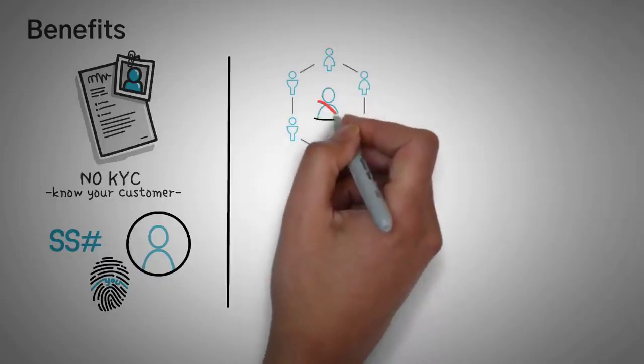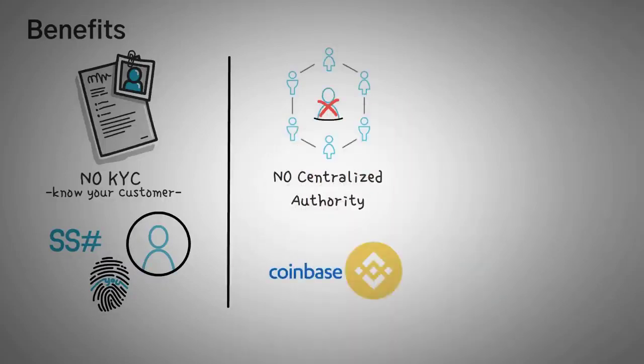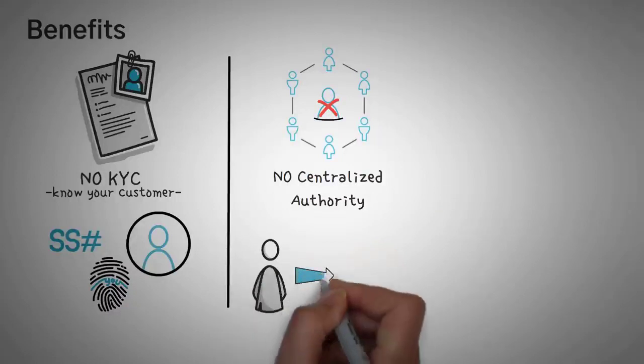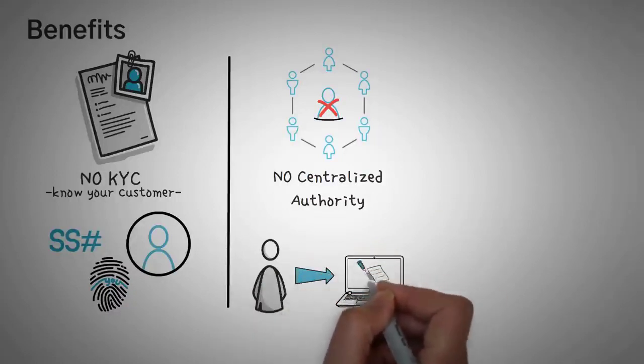Secondly, there is no centralized authority. Instead of trusting Coinbase or Binance, you just have to trust the smart contract, which is essentially code. Code, in fact, is much more reliable than humans.